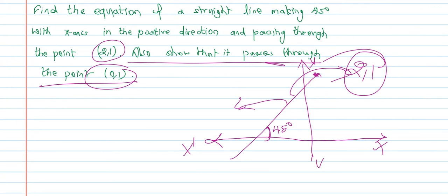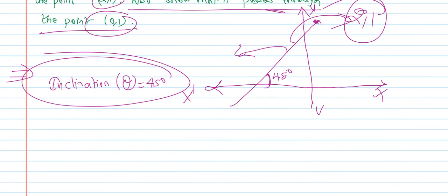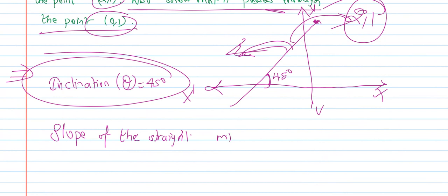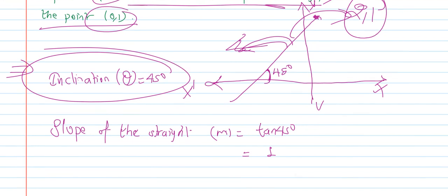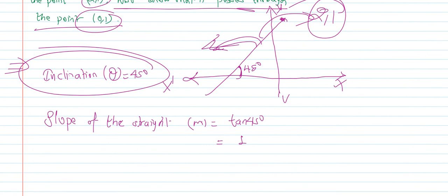Yo line hami yoruko lakhneta yoo line 1-point form nai lakhncha. Hami yoruko 45 degree bhanneko positive direction ma chha, so hami yoruko X-axis sanga yo bhanneko inclination — inclination bhanneko theta — theta chha hami yoruko 45 degree. So, slope of the straight line, m = tan(45°) = 1. So slope chha hami yoruko 1.